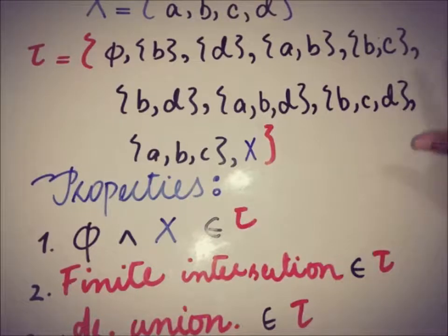So this is the right example of checking whether this collection is a topological space or not, and this is a topology. You can verify this with the help of these three properties.